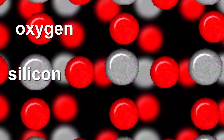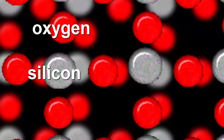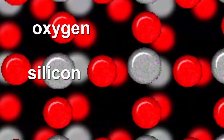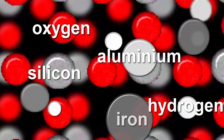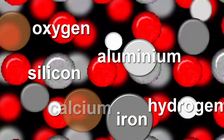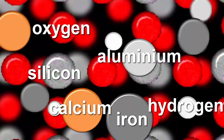If we could magnify a brick, we would see that it's also made of atoms. It's got silicon and oxygen atoms, but other kinds like hydrogen, aluminium, iron and calcium as well. What a substance is like depends upon what atoms it's made of and how they're arranged together.